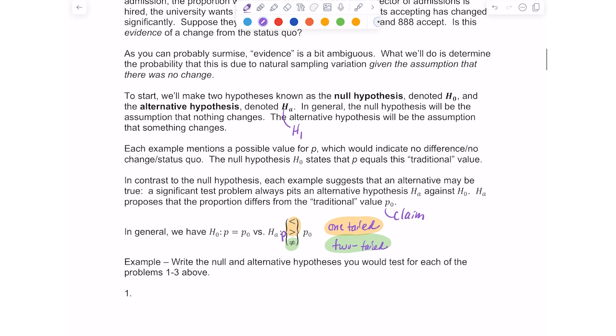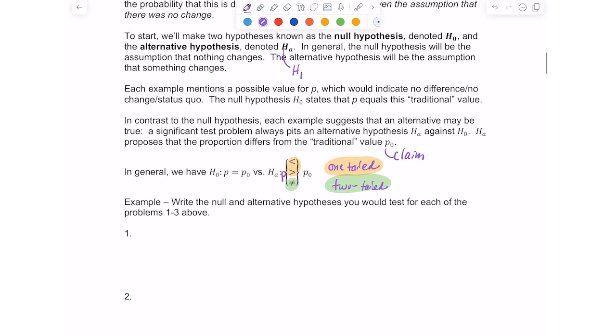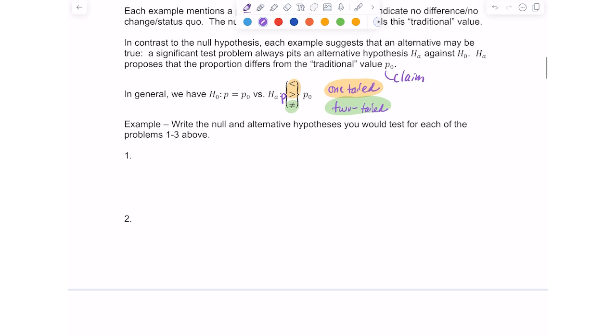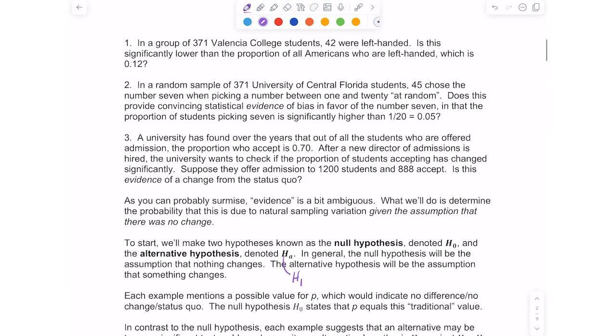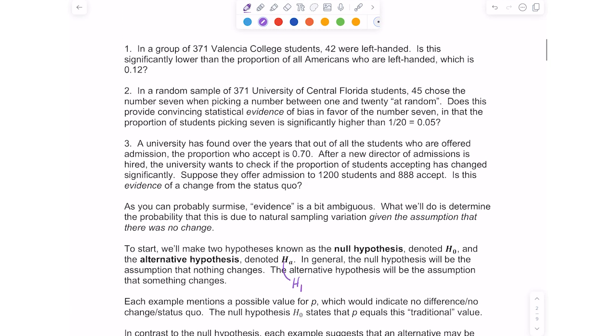Let's practice writing the null and alternative hypotheses for each of those three scenarios before we do a hypothesis test. So the first scenario says, in a group of 371 Valencia College students, 42 were left-handed. Is this significantly lower than the proportion of all Americans who are left-handed, which is 0.12?